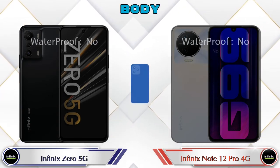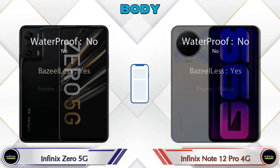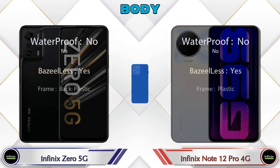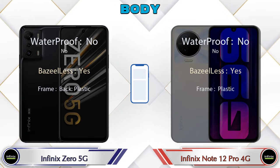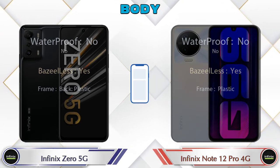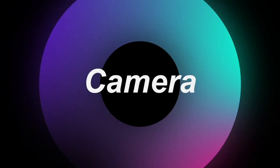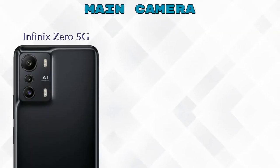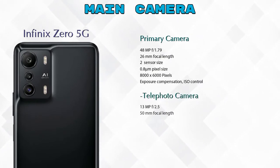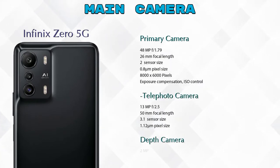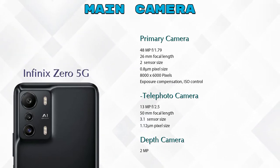Now let's see the complete detail about the body of both phones. Let's also talk about our favorite feature — the camera. First, talking about the rear camera, we can see three cameras in the Zero 5G: a primary camera, a telephoto camera, and a depth camera.